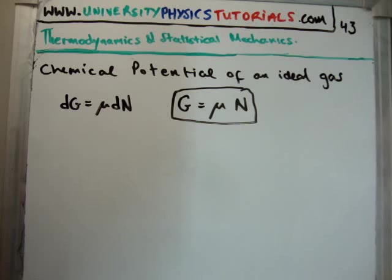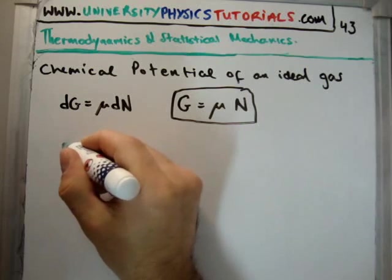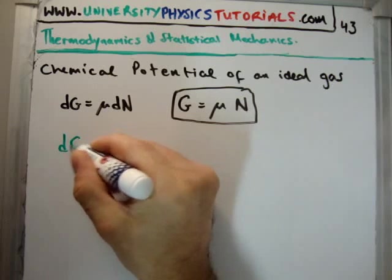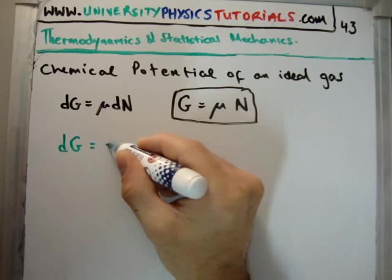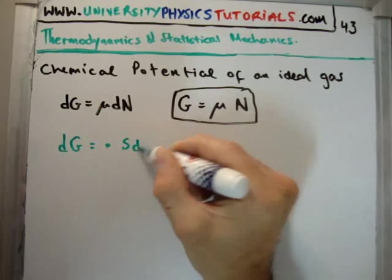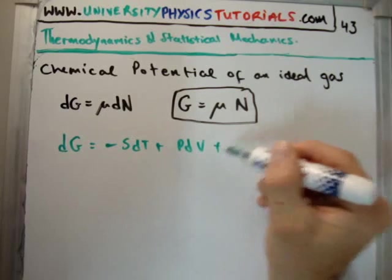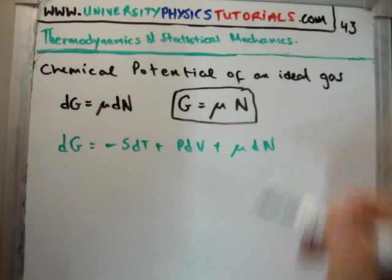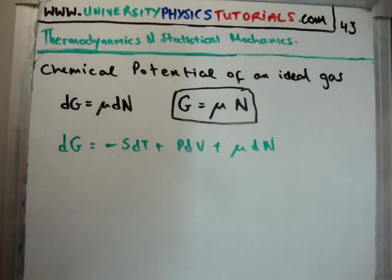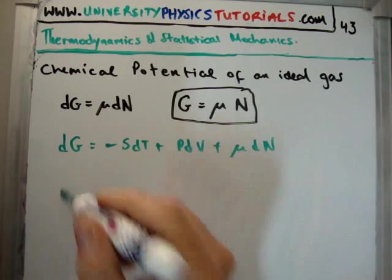Going back to our thermodynamic identity for the Gibbs free energy, we find that an infinitesimal change in the Gibbs free energy is minus S dT plus P dV plus μ dN.